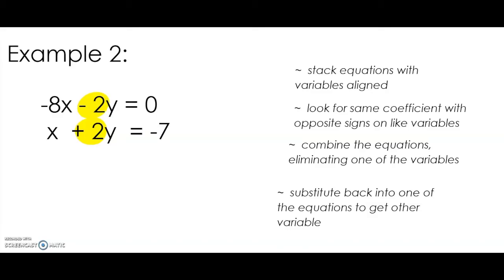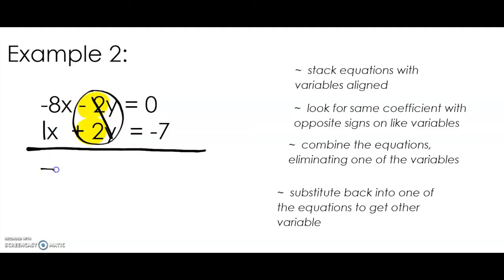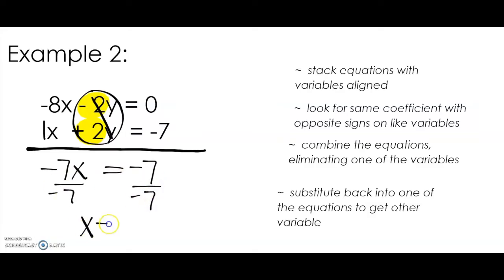We're going to combine the equations. When we combine our equations, our Y's are going to cancel out. Negative 8X and positive 1X gives us negative 7X, and 0 minus 7 is negative 7. Divide both sides by negative 7 — we get that X equals 1. So our X coordinate is 1.